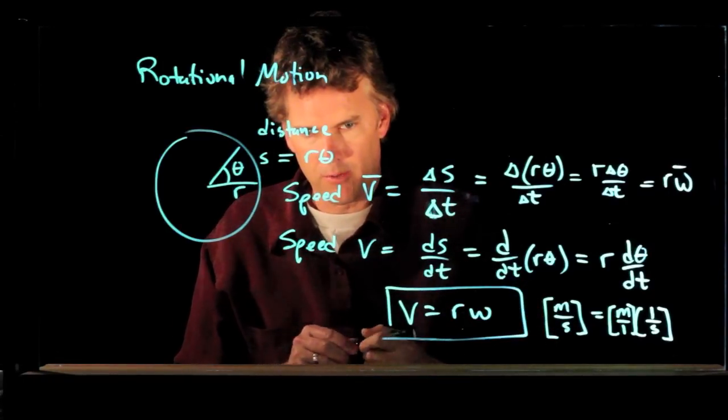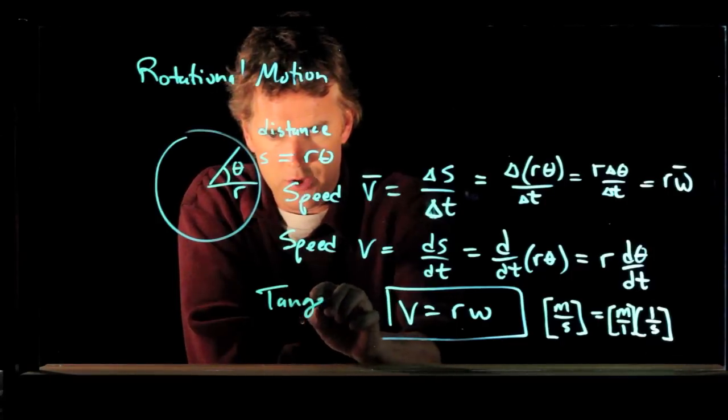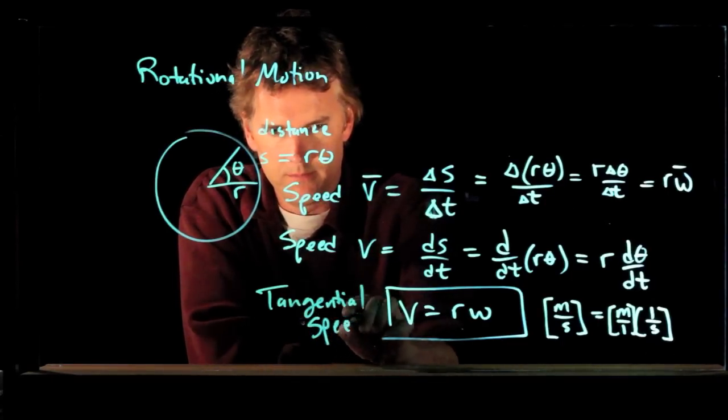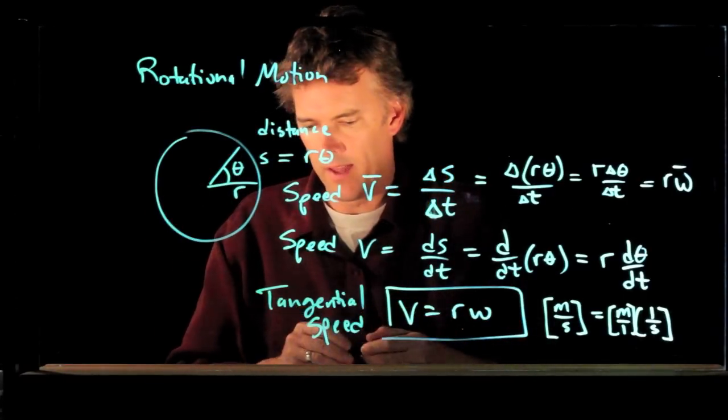You just look at the units. So this thing right here, V, is called the tangential speed. How fast are you actually going around that circle?